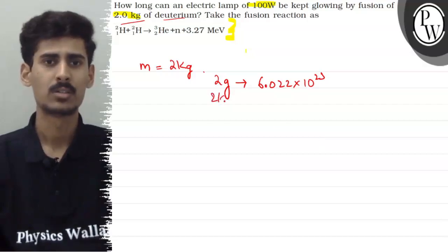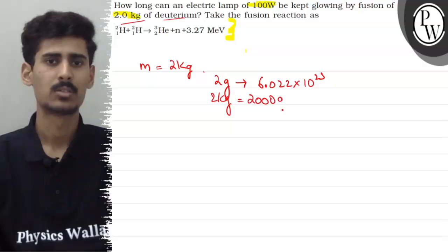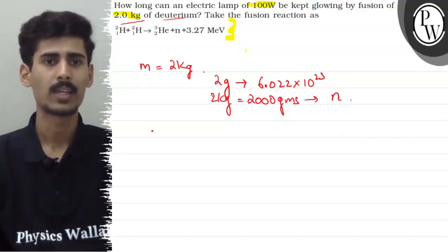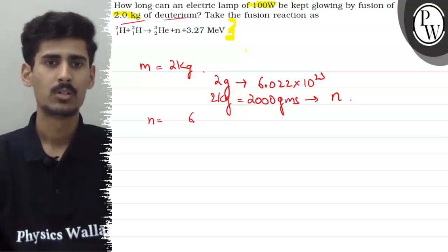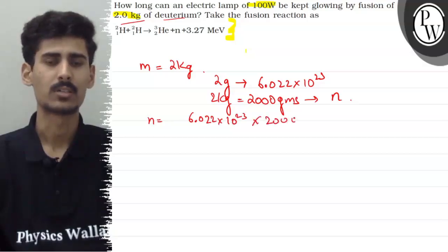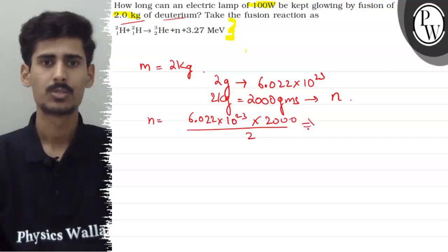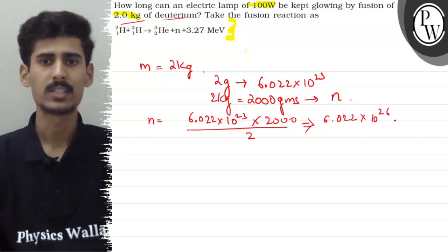So, in our 2 kg, or you can say 2000 grams, of deuterium, how many atoms will be present? So our value of n will be equal to 6.022 into 10 raise to the power 23, into 2000 divided by 2. So this becomes 6.022 into 10 raise to the power 26 atoms.